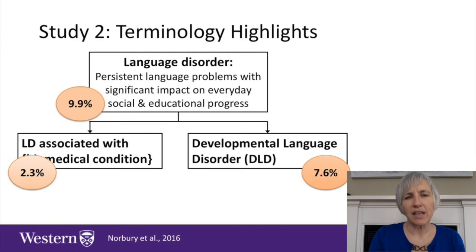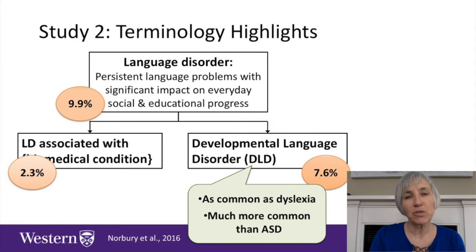In a recent study, prevalence estimates for these conditions were that almost 10% of children might have a language disorder that fits one of these subtypes. In fact, developmental language disorder was as common as dyslexia, and much more common than autism spectrum disorder. Those are sobering numbers. Consider the awareness and resources available for a condition like Autism Spectrum Disorder, that is considerably more rare than developmental language disorder.